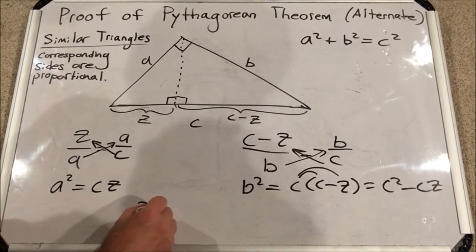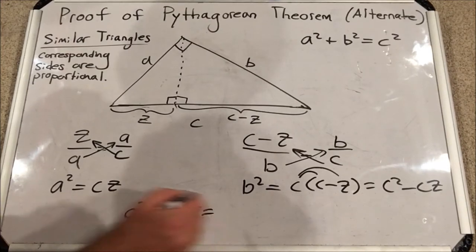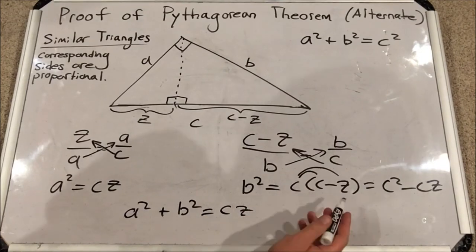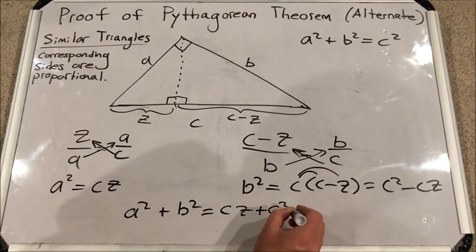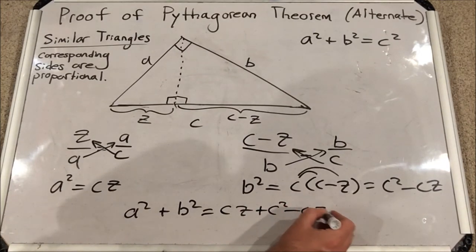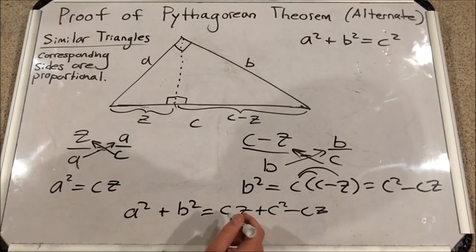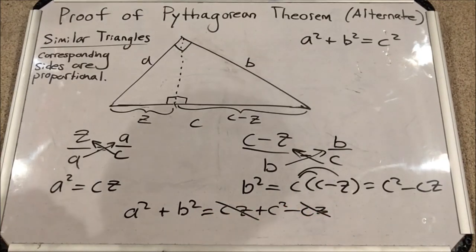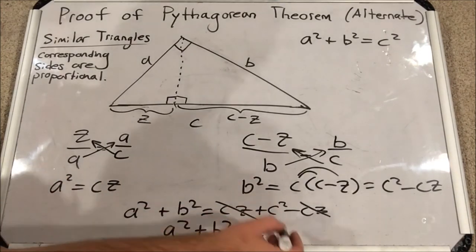So I'm going to say, I'm going to determine what A squared plus B squared is using these expressions. Well, A squared is CZ and B squared is C squared minus CZ. So I'm going to add that to CZ. Okay, so you might be confused until you notice that boom, CZ minus CZ is on the right hand side. That's going to cancel, which leaves you A squared plus B squared equals C squared, which is what we were trying to prove. We've just proven the Pythagorean theorem using similar triangles.